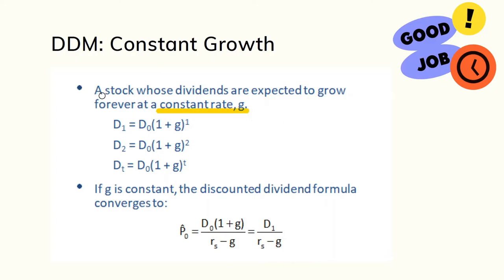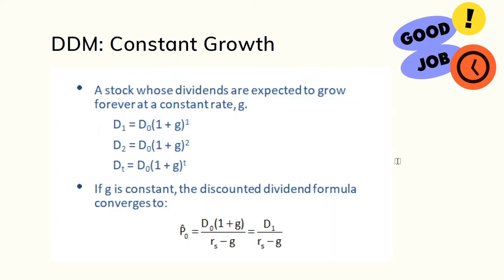This concept suggests that the stock paying dividends is expected to grow at a constant rate equal to g forever, into infinity. The role of g is to multiply the dividend each period. For example, dividends in year one equal dividends at time zero multiplied by (1 + g). Given a constant growth rate g forever, the discounted dividend formula converts to P_0 = D1 / (r - g), where D1 is defined as the dividend at the present time multiplied by (1 + g).